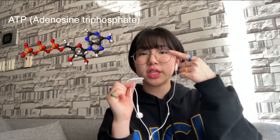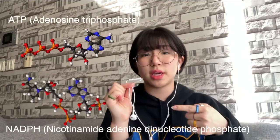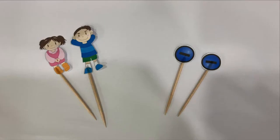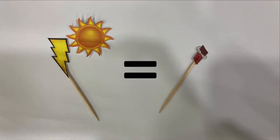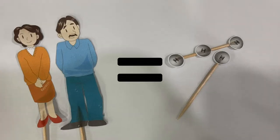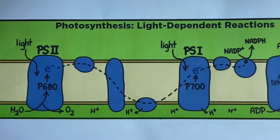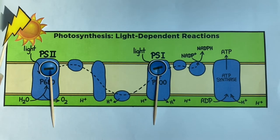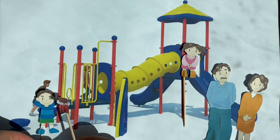What happens to the kids is similar to what happens to electrons in the light-dependent reaction, where their main goal is to produce ATP and NADPH. Let's now relate the two things. We can say that the electrons are the kids, the sun is our candy bar, the parents are our hydrogen ions — which we'll talk more about later — and the playground is the machines in the light-dependent reaction. The sun excites the electrons, like how sugar excites the kids.